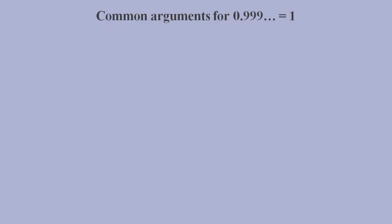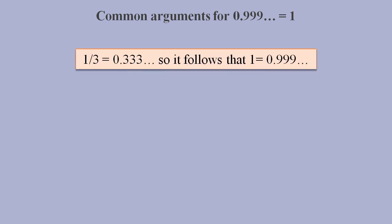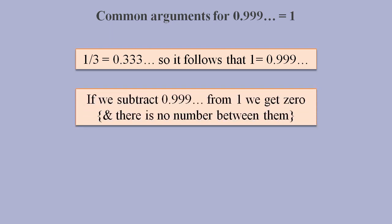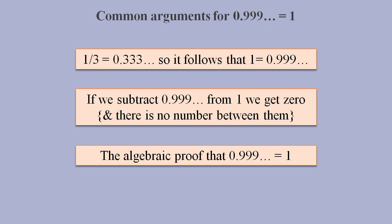Three common arguments are that 1 third equals 0.3 recurring, so it follows that 1 equals 0.9 recurring. If we subtract 0.9 recurring from 1, we get 0. And finally, there's the algebraic proof that 0.9 recurring equals 1. We'll examine each of these arguments in turn.